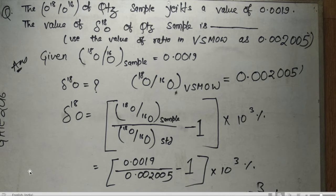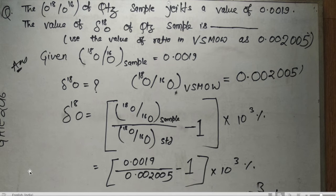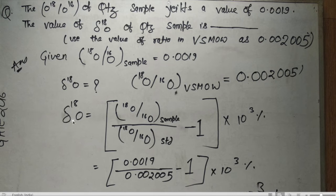The question: the ratio of O18 to O16 in a quad sample is 0.0019. We have to find delta O18 of the quad sample. The VSMOW standard ratio is given as 0.002005. The formula is: δO18 = [(R_sample / R_standard) − 1] × 10³ per mil.